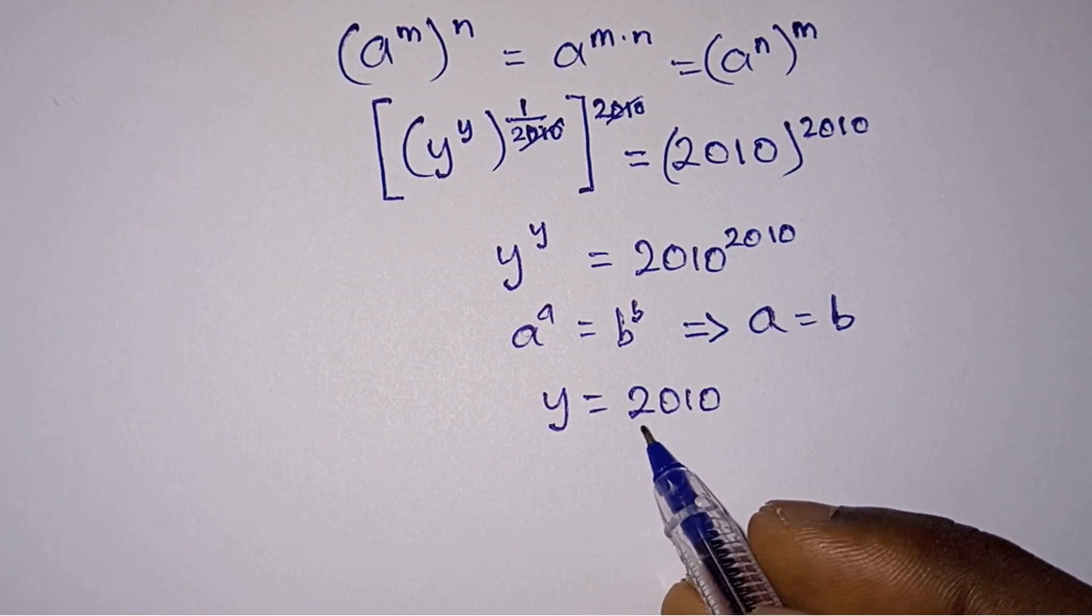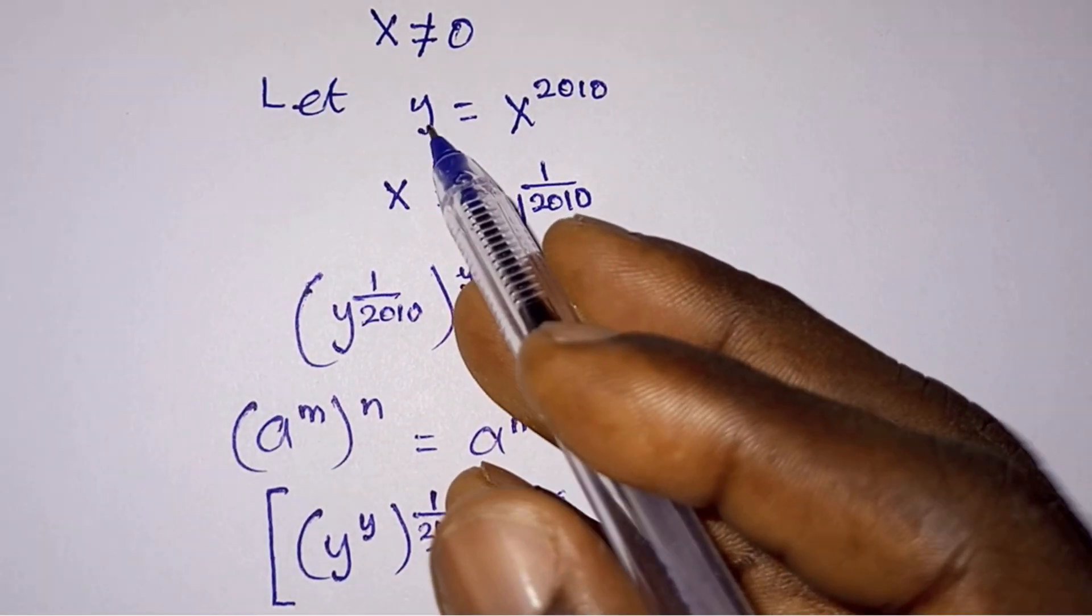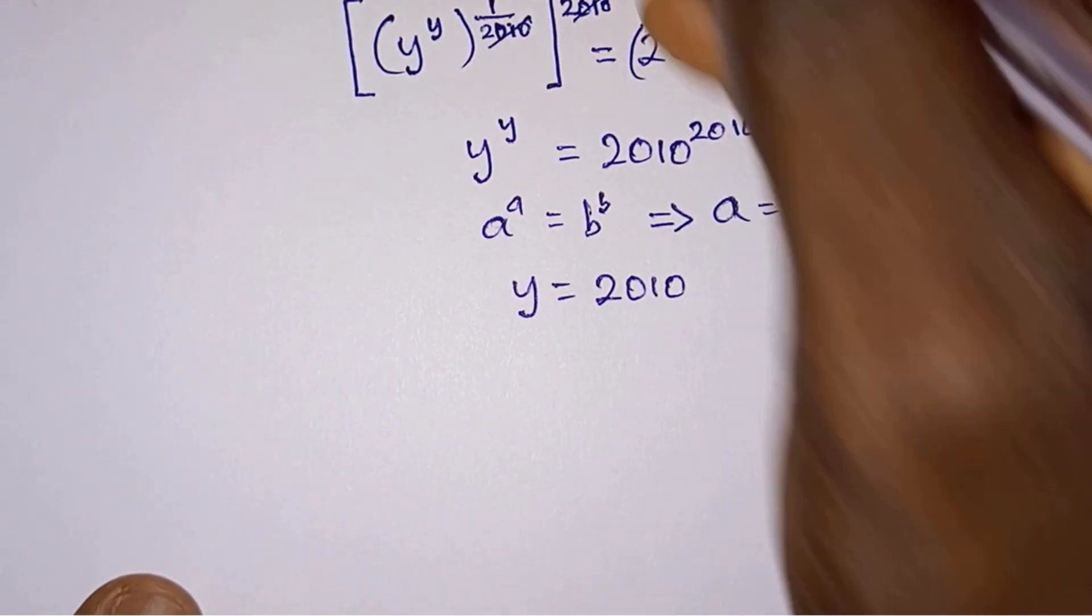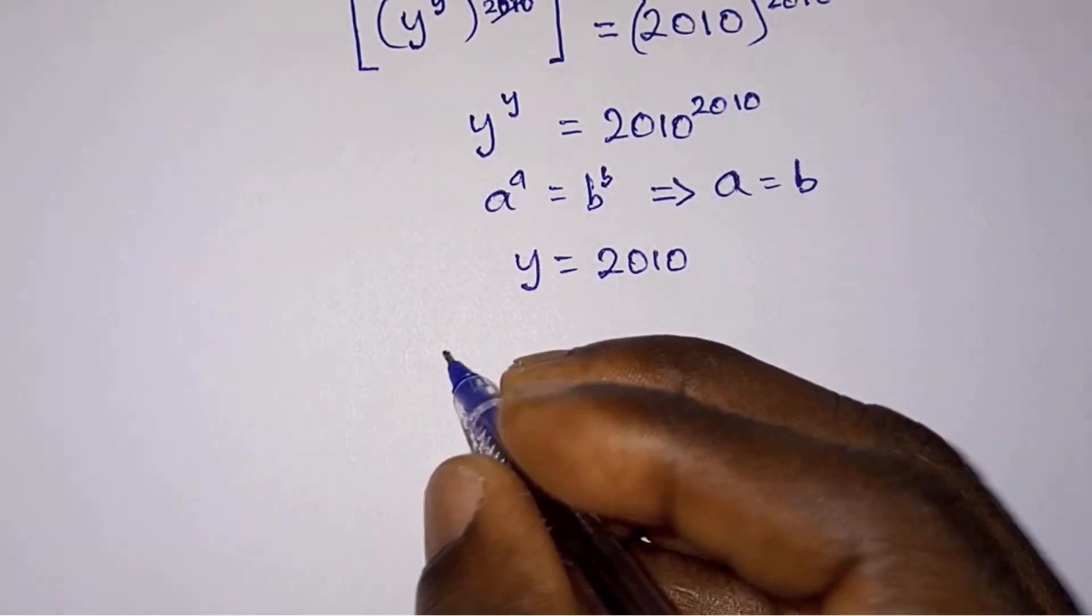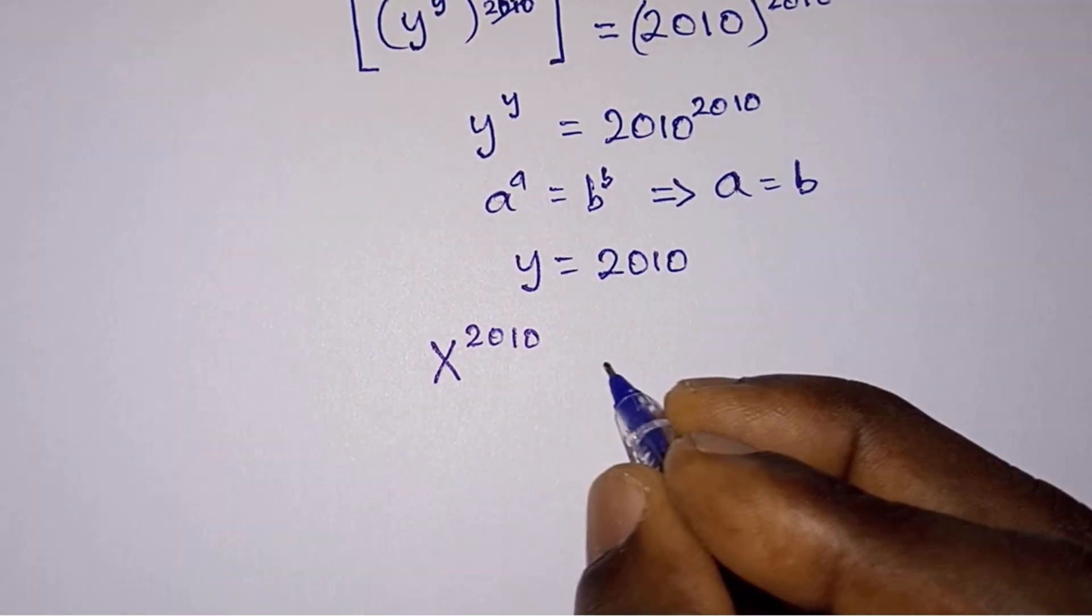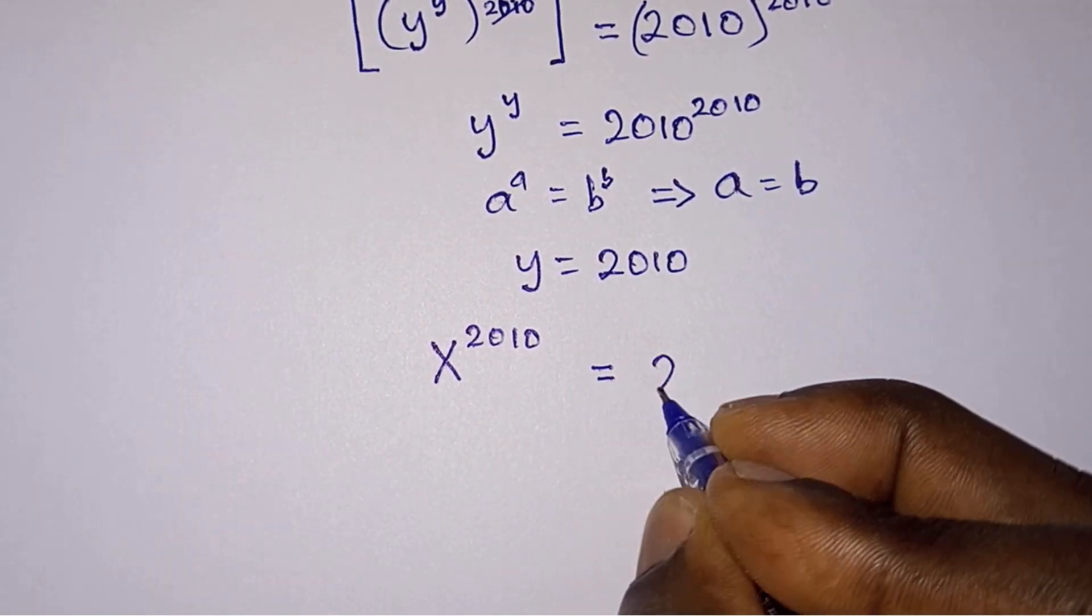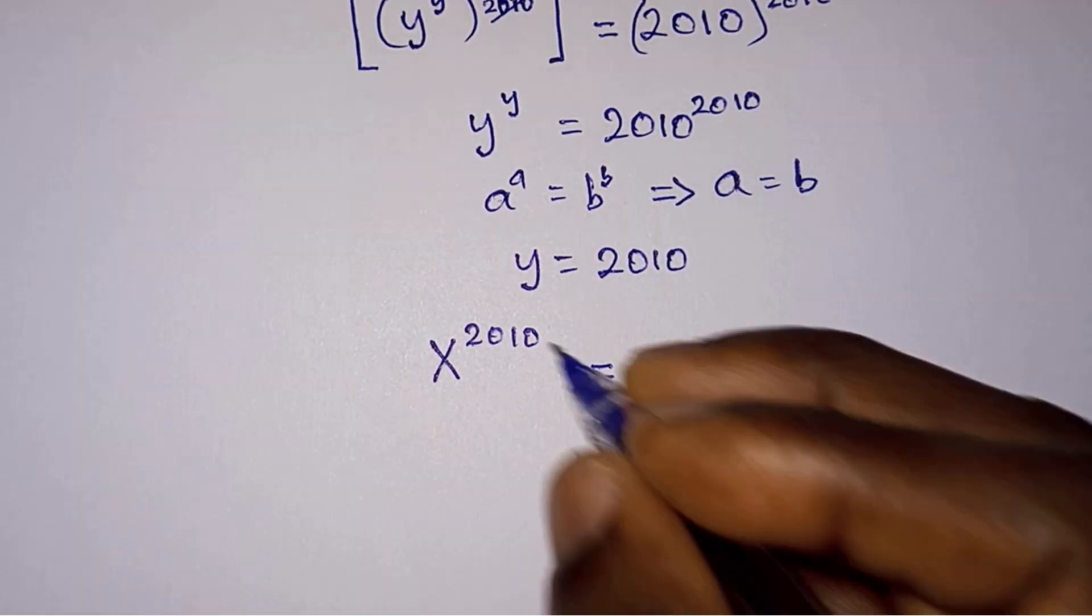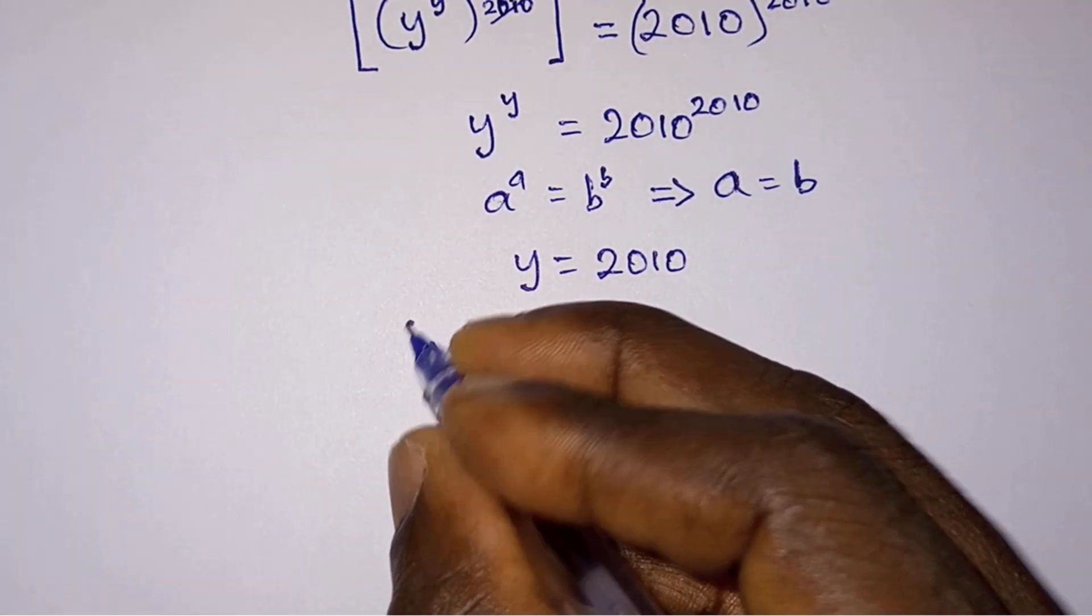So straight away from this we have y is equal to 2010. But remember we are not looking for y but rather we are looking for x. From this equation we have y to be x to the power 2010, so when y is equal to 2010, we have x to the power 2010 is equal to 2010.